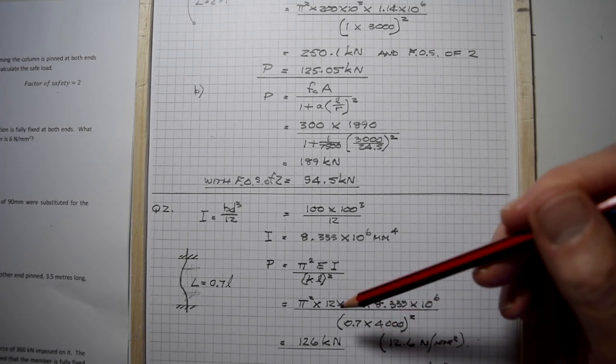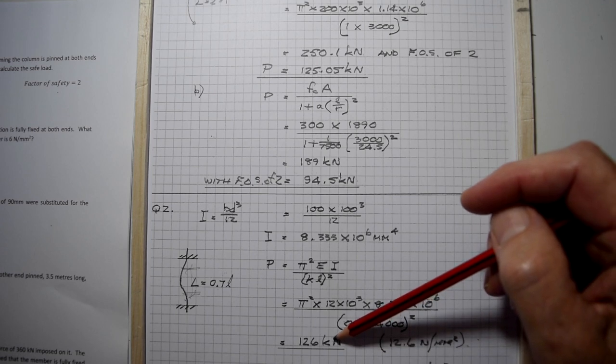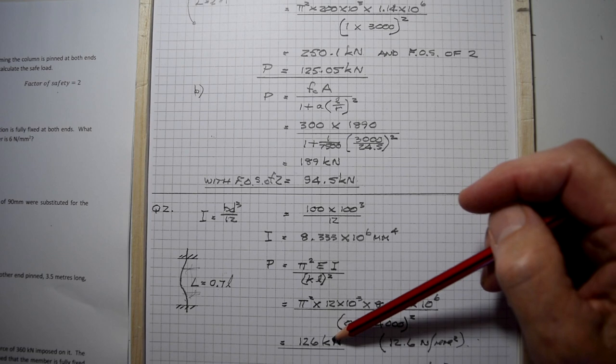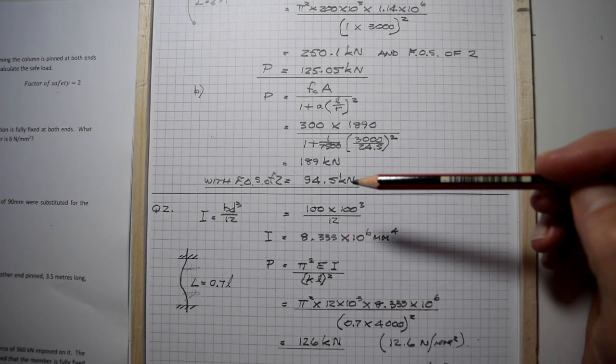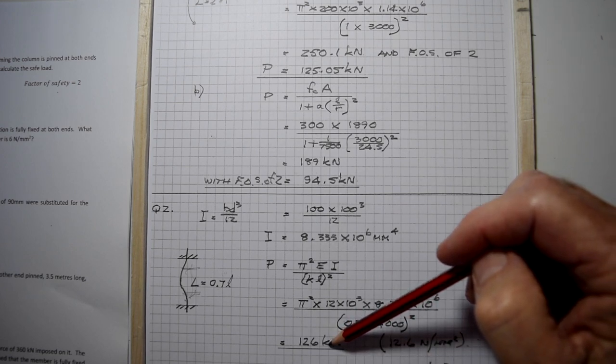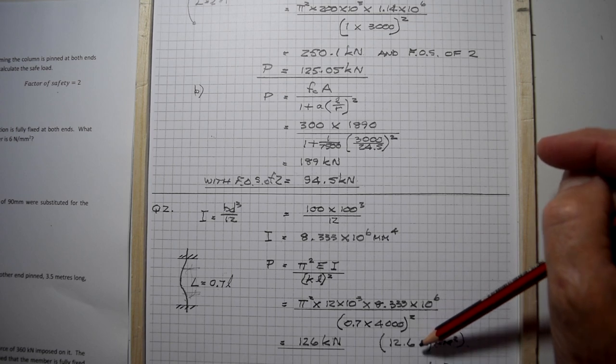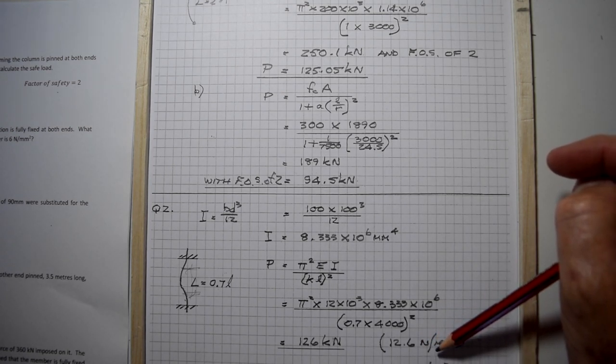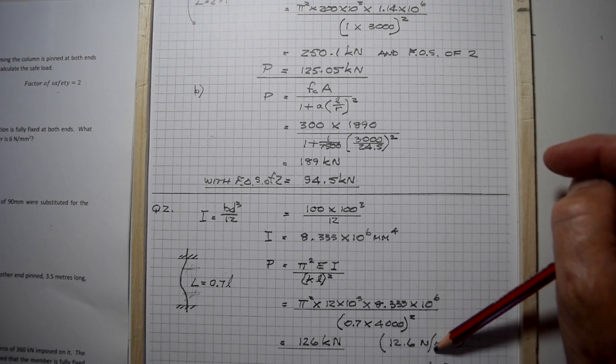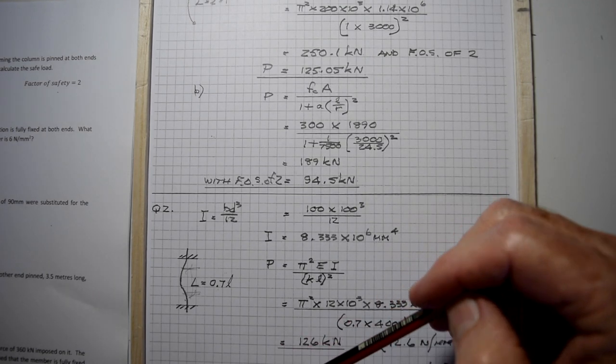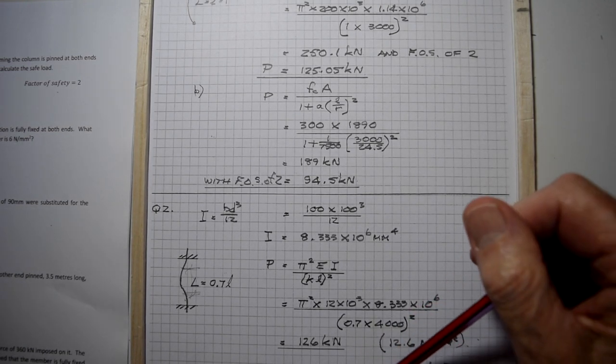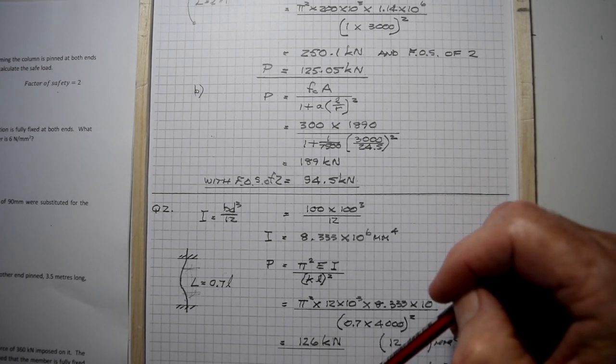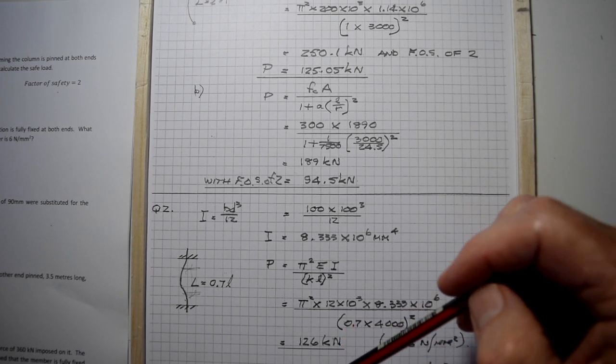We get a figure of 126 kilonewtons theoretically for the 100 by 100 timber post with elastic modulus of 12 times 10 to the power of three. But the stress from this load is 12.6 newtons per square millimeter, and the question states the allowable stress is limited to six newtons per square millimeter.